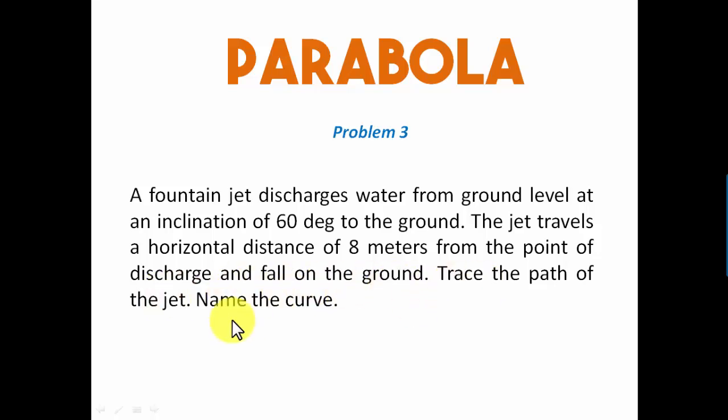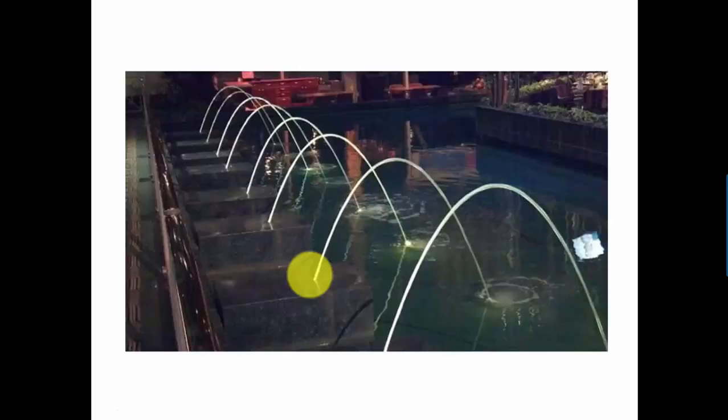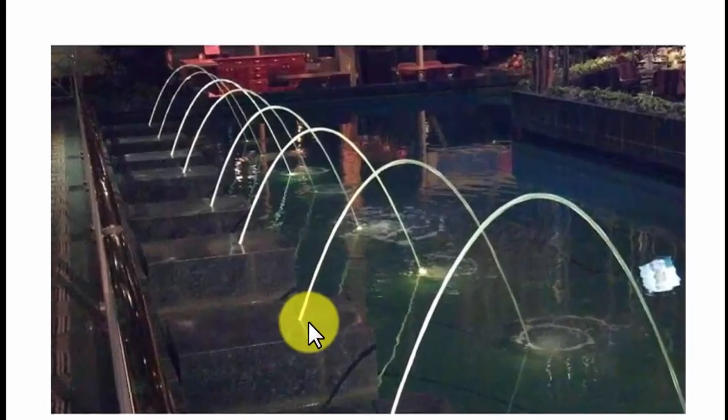Well, the curve obviously is going to be a parabola. Let's see how all of this can be worked out. But before that, I'm going to show you a small picture. So this is the fountain jet, and let's say the jet is released from this particular point at an angle of 60 degrees.